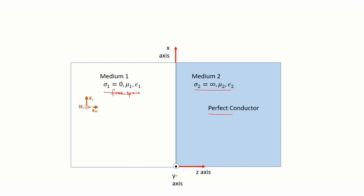When an electromagnetic field is propagating in the positive x direction, and the electric field is in the positive x axis, and the magnetic field — the dot represents it is coming out of the field — when this electromagnetic field is incident on the perfect conductor normally, that is at 90 degrees, what happens?